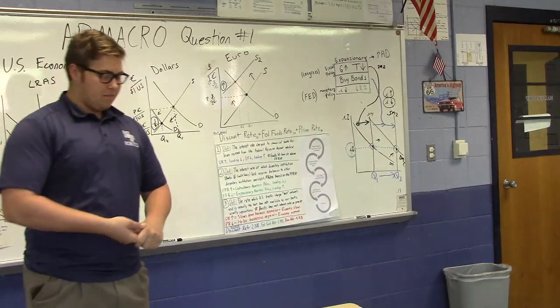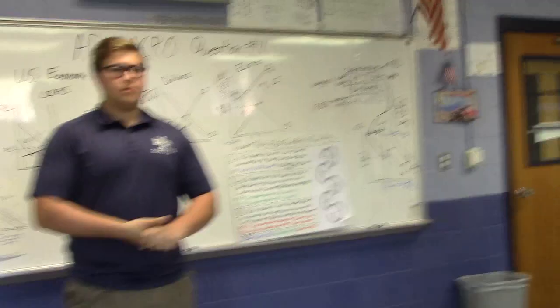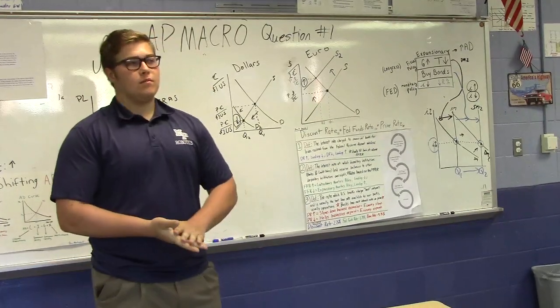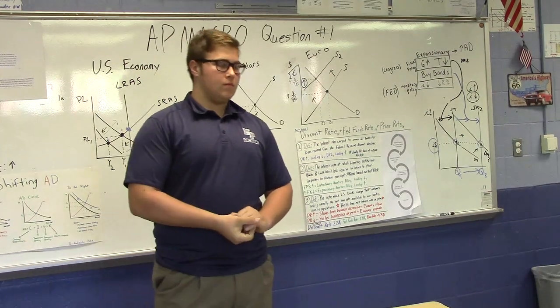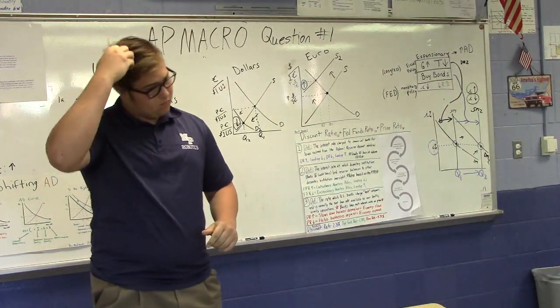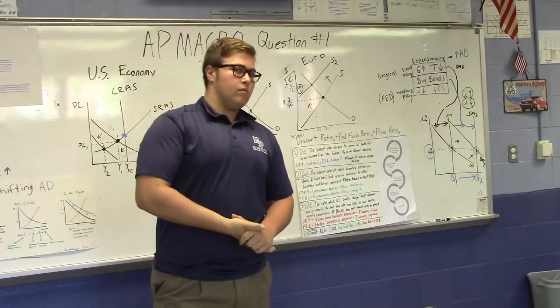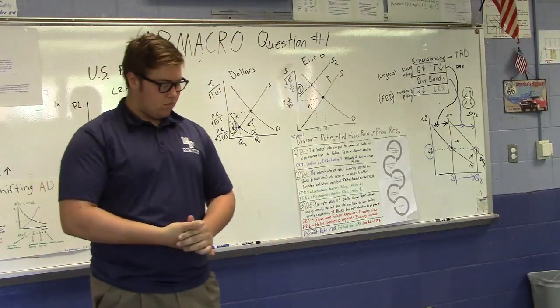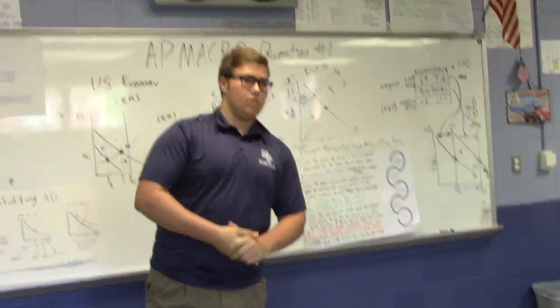Question one. Assume the United States economy is in a recession. Draw a correctly labeled graph of the long-run aggregate supply, short-run aggregate supply, and aggregate demand curves and show each of the following: current price level labeled PL1 and current output labeled Y1.